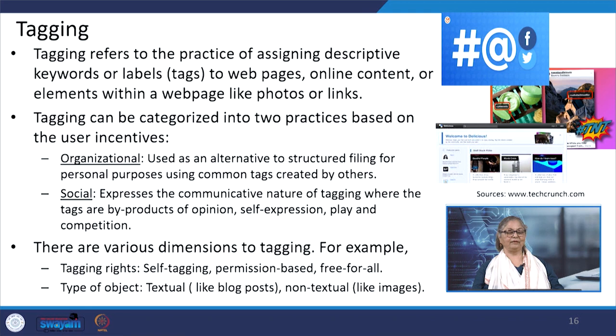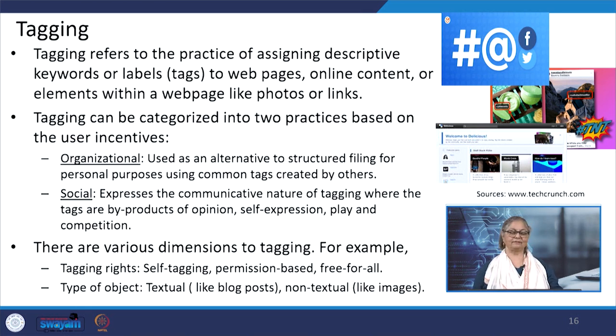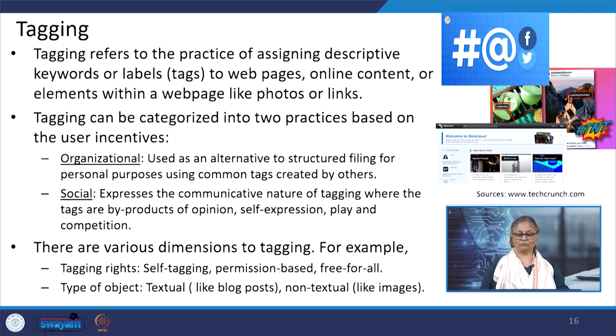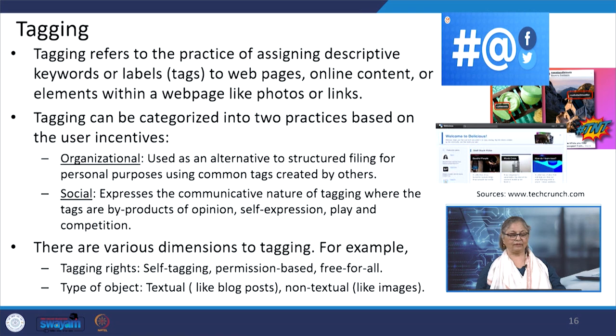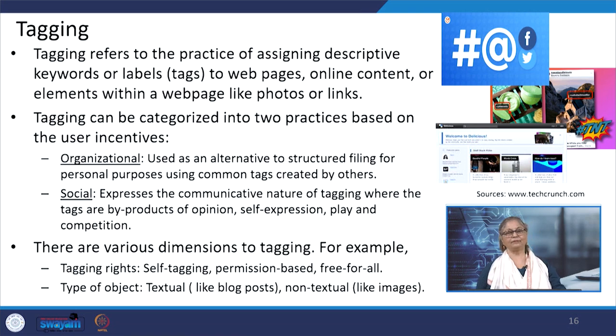Another social software that has introduced new dimensions to searching and other applications on the web is tagging and social bookmarking. Tagging refers to the practice of assigning descriptive keywords or labels to web pages, online content, or elements within a web page like photos or links. Tagging can be categorized into two practices based on user incentive: organizational, used as an alternative to structured filing for personal purposes; and social, which expresses the communicative nature of tagging where texts are by-products of opinion, self-expression, play, and competition.